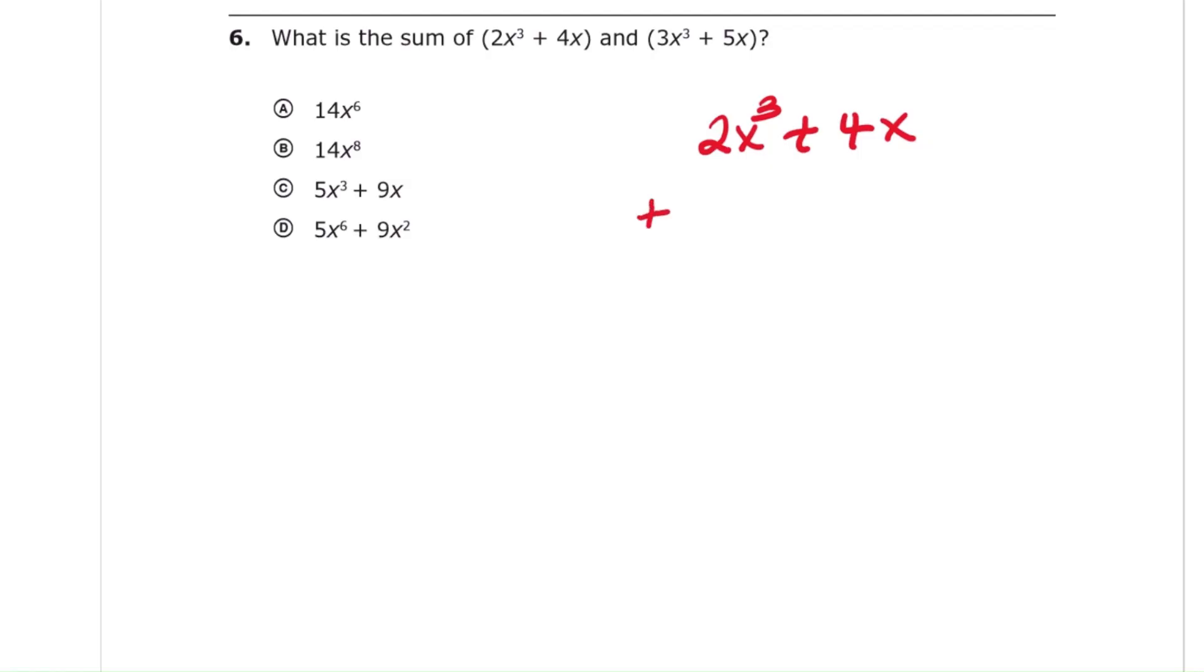Question 6, the expression is 2x cubed plus 4x plus 3x cubed plus 5x. Step 1, combine the x cubed terms: 2x cubed plus 3x cubed equals 5x cubed. Step 2, combine the x terms: 4x plus 5x equals 9x. Final result, 5x cubed plus 9x. Answer, choice C.